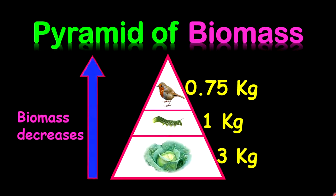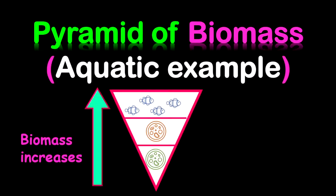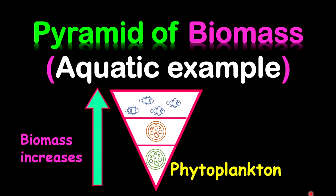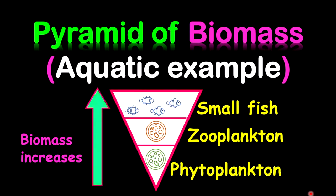I want to give a special example of a special type of pyramid of biomass, and this example is for an aquatic ecosystem. The biomass will increase along the food chain. The reason for this is because the producer will be microscopic, and the organisms will get larger as you go along the food chain. This type of pyramid is inverted. In this aquatic environment, we might have phytoplankton as the producers, then zooplankton, then small fish, and then larger fish — for example, a shark.